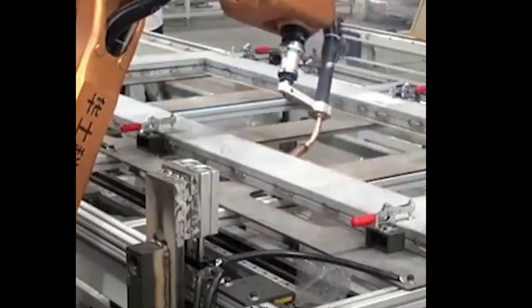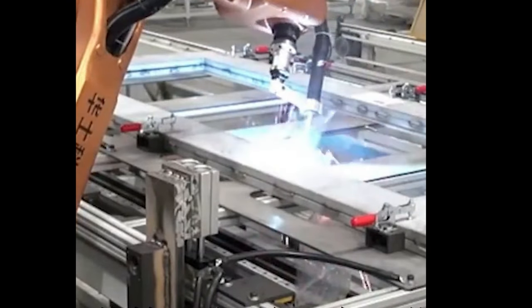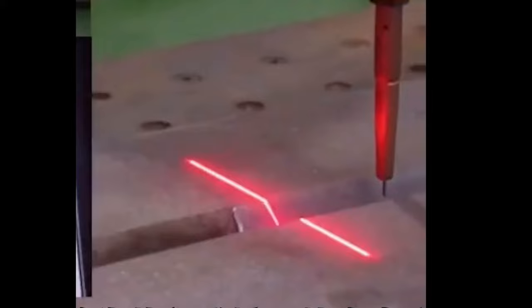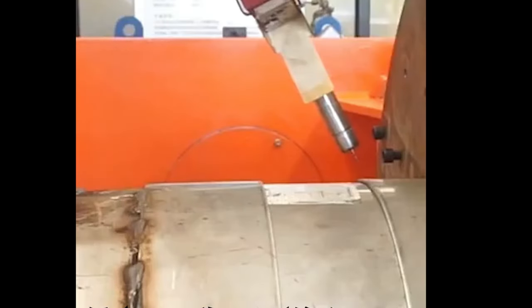However, with welding robots, it's different. They can perfectly handle the job. First, in terms of visual control technology, it involves capturing images of the welding area to generate video signals, which are then sent to an image processor for processing, providing tracking feature parameters. For example, it's like the process where the human visual center transmits what the eyes see to the brain to form an image.